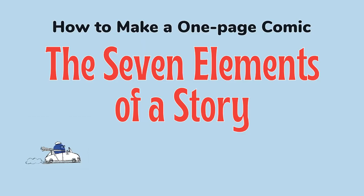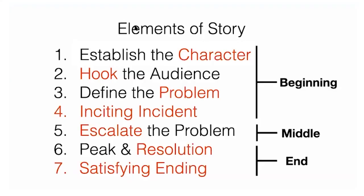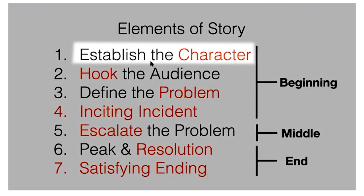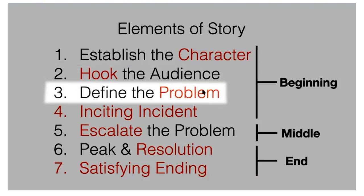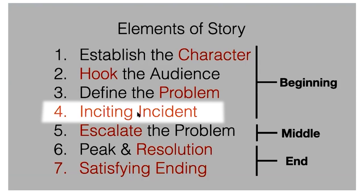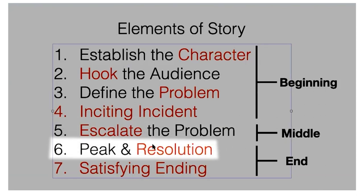This is basically the seven elements of story. We establish the character, hook the audience, and define the problem — that's all in the beginning. The inciting incident is the thing that starts the story. Then we escalate the problem, reach a peak, and at the end we have a resolution where we resolve the problem and have a funny or happy ending.